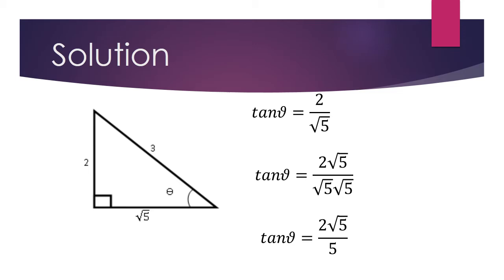We get tan theta is 2 over root 5. Then we can rationalize the denominator to get 2 root 5 over root 5 multiplied by root 5. So our solution is tan theta is 2 root 5 over 5.